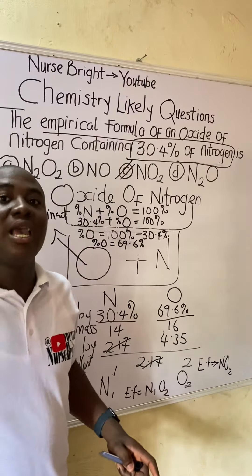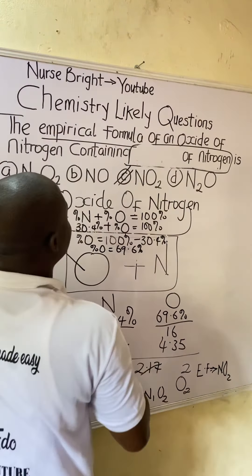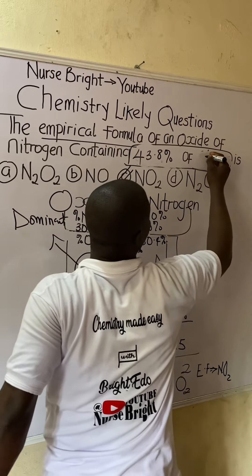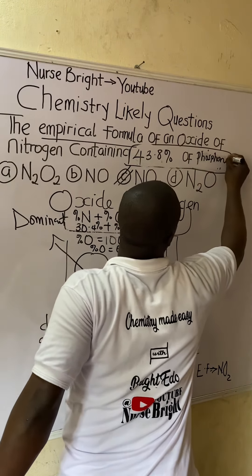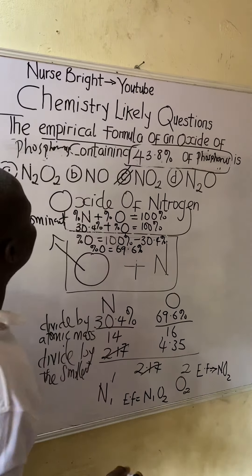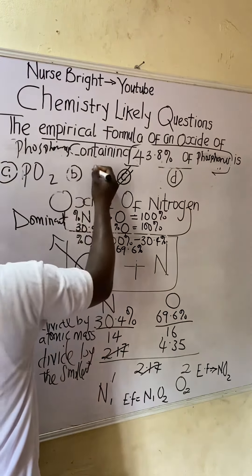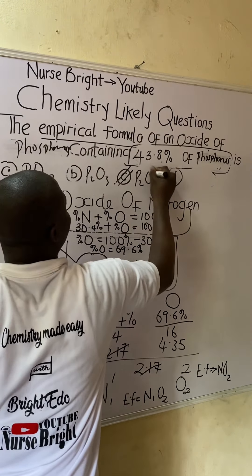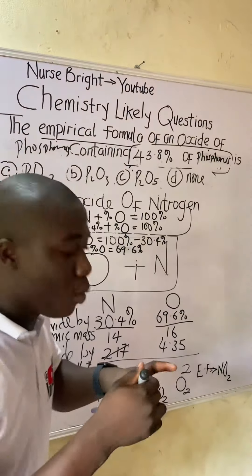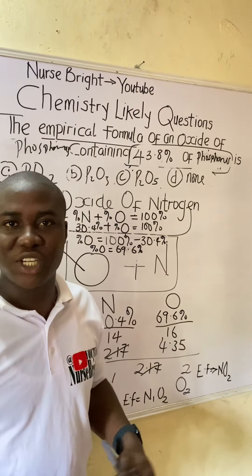Here is a practice question — solve it and provide the answer in the comments. The question is: the empirical formula of an oxide of phosphorus containing 43.8 percent of phosphorus is what? The options are: A) PO₂, B) P₂O₃, C) P₂O₅, D) none of the above. If you found this video helpful, please subscribe and share with your friends. Thanks for watching.